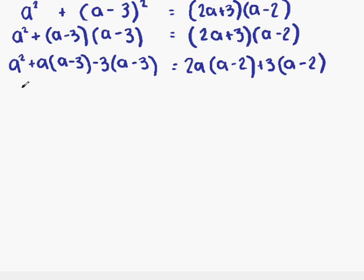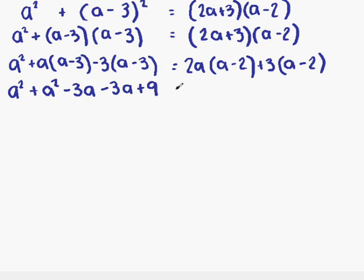Now we can start to multiply out the brackets. We put our a squared down again. Then a times a is a squared; a times minus 3 is minus 3a; minus 3 times a is minus 3a; and minus 3 times minus 3 gives us a positive 9. On the right side, 2a times a is 2a squared; 2a times minus 2 is minus 4a; 3 times a is 3a; and 3 times minus 2 is minus 6.